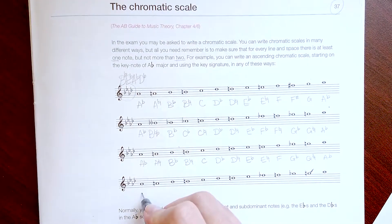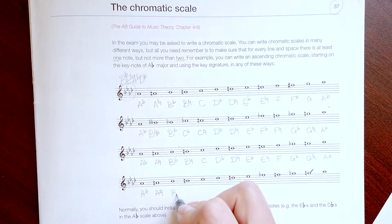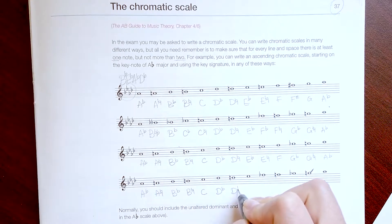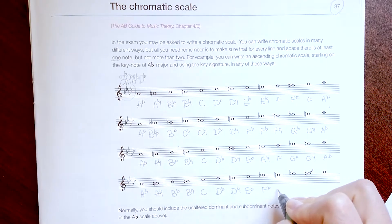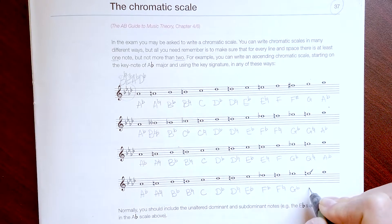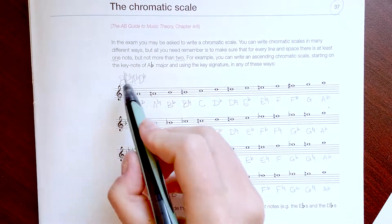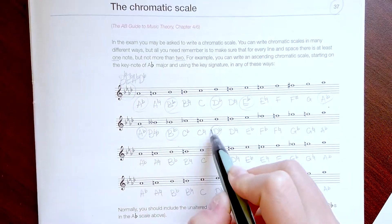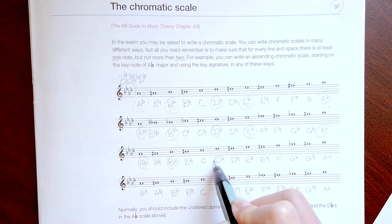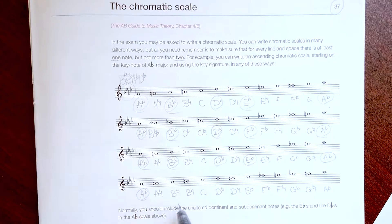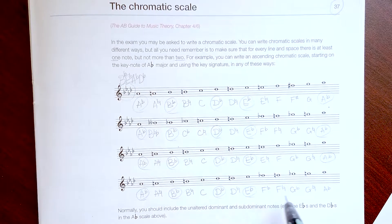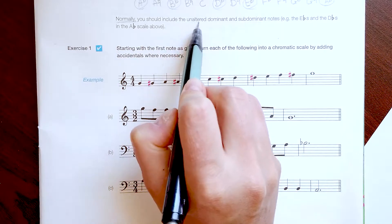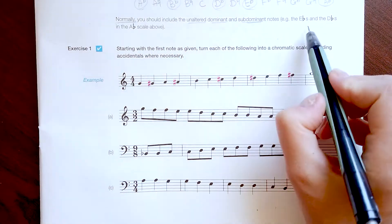The last option starts the same way, but in this case you can find at the end no sharps, just flats. We always have to keep the key signature and add them — don't forget about them. Normally we should include the unaltered dominant and subdominant.